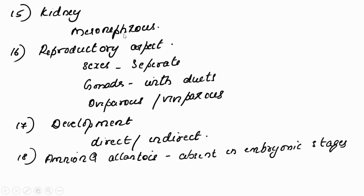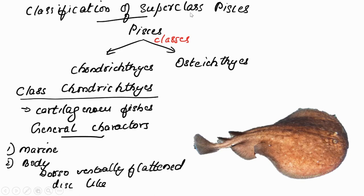The kidney is mesonephrous — developed from the middle portion of the nephric tract. Regarding reproduction: sexes are separate, gonads have ducts, and both oviparous (egg-laying) and viviparous (live birth) forms exist. Development may be direct — without larval stages — or indirect — through a larval stage. Amnion and allantois, which are embryonic coverings, are absent in the embryonic stages of Pisces. The classification of Superclass Pisces will be learned in the next class. Thank you.